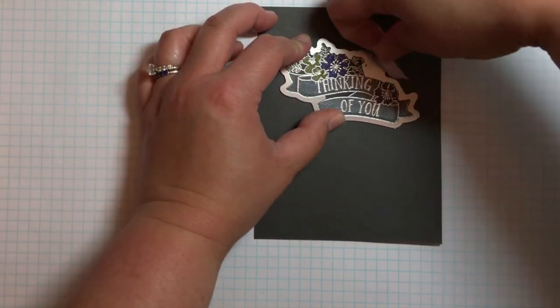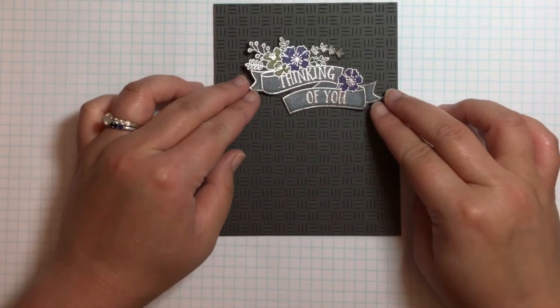Once it was dry, I die cut it with a coordinating die. I also die cut a piece of dark gray cardstock with the quilted stitched basket weave cover plate die.